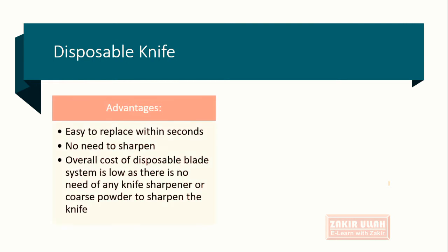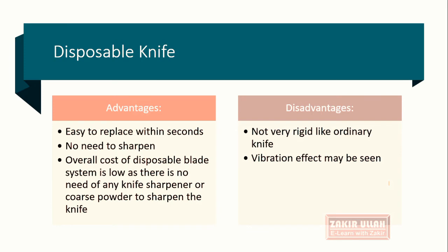The advantages of disposable knives are that they are very easy to replace compared to reusable knives and can be replaced within seconds. They do not need to be sharpened, and the overall cost of a disposable blade system is low as there is no need for a knife sharpener or coarse powder. The disadvantage is that disposable knives are not as rigid as ordinary knives, so a vibration effect is present which can make sections slightly distorted or rough.